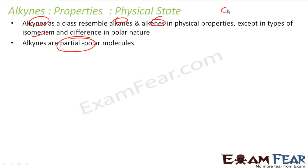Why? Because if you see here, this carbon is sp hybridized and the other is sp3. This sp carbon is more electronegative than the sp3 carbon, because it has 50% s-character and electrons closer to s-orbital are held more tightly. So it gets a partially negative charge and the other gets a partially positive charge.